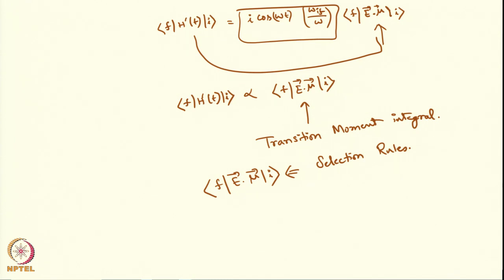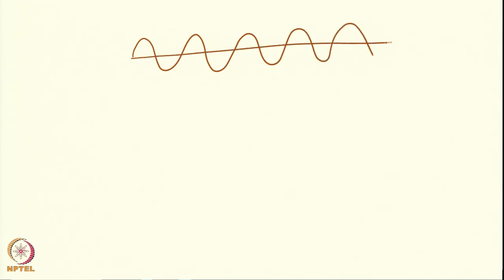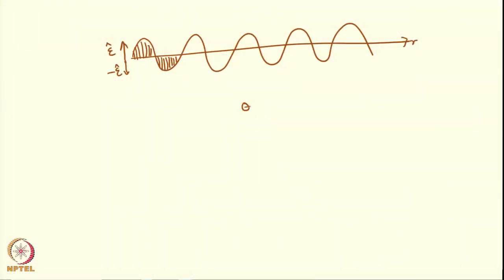Now let me give a simple example. Let us suppose there is an electromagnetic radiation propagating in direction R, and your electric field vector ε is along this direction — when it goes down it becomes −ε, so the electric field vector is going up and down, it changes sign. Now if you take a diatomic molecule A-B, since the diatomic molecule is linear, the dipole moment is in one direction. If you consider A as positive and B as negative, there is a positive-to-negative direction.